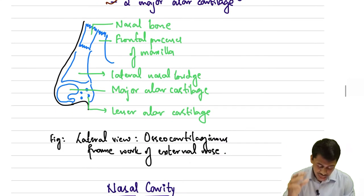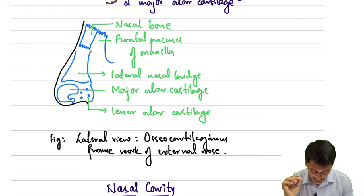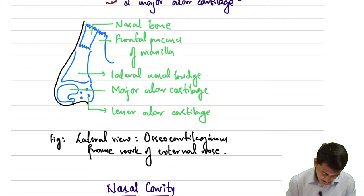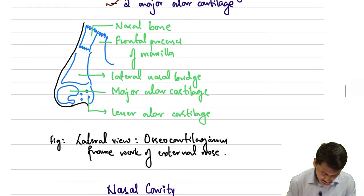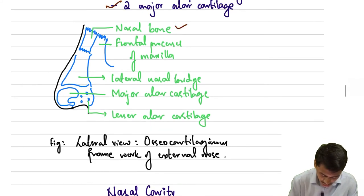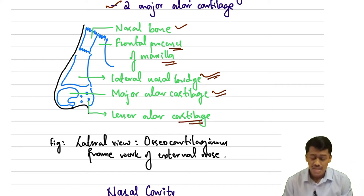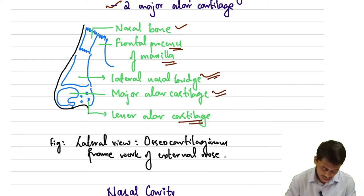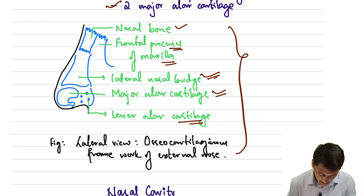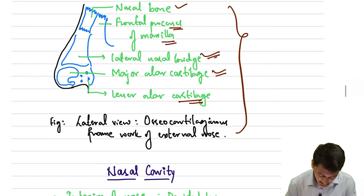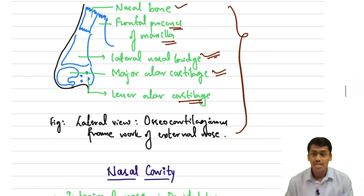Looking at the lateral view of the osteocartilaginous framework of the external nose, you can see the nasal bone, the frontal process of the maxilla, the lateral nasal cartilage, the major alar cartilages, and also the lesser alar cartilages.